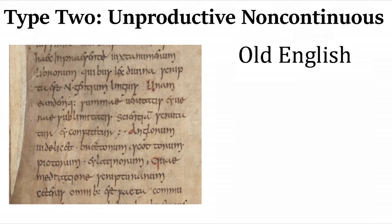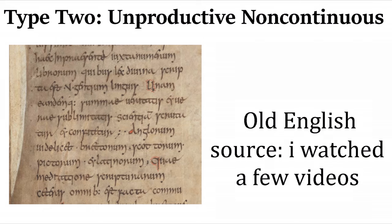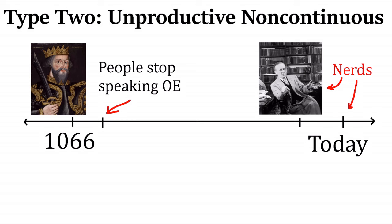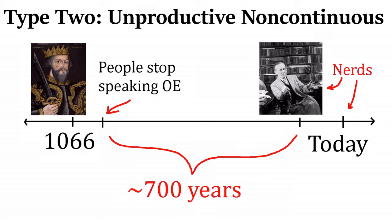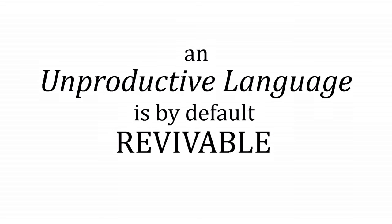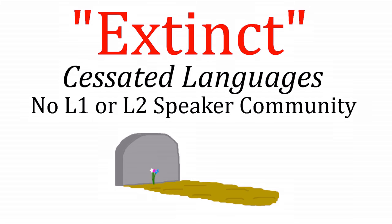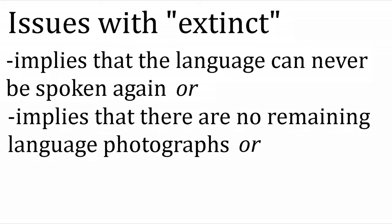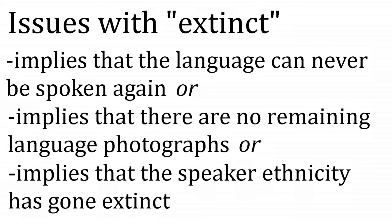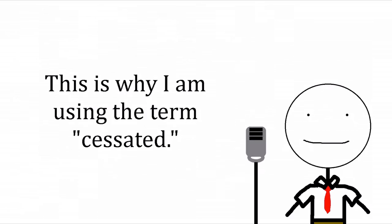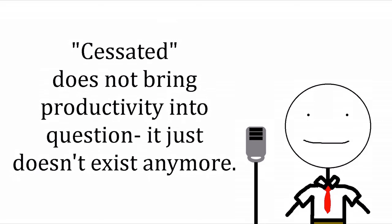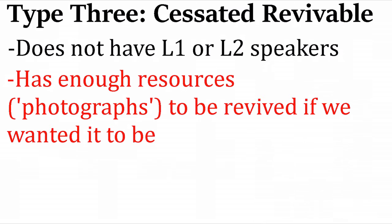With enough resources, people can speak Old English fluently with each other today, but the chain of passing the language down to the next generation, allowing for natural language change, is no longer productive. Unlike unproductive continuous languages, nobody was fluent in Old English for at least 700 years. Since these languages have L2 communities they are by default revivable. This differs from 'cessated' languages, which have ceased to have any fluent speaker community at all — L1 or L2. Formerly we'd call these extinct, but 'extinct' is a bad term because it implies the language can never be spoken again, or that the speaker ethnicity itself has gone extinct — which may or may not be true.